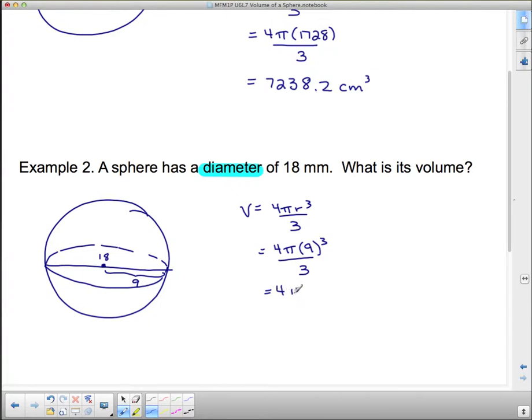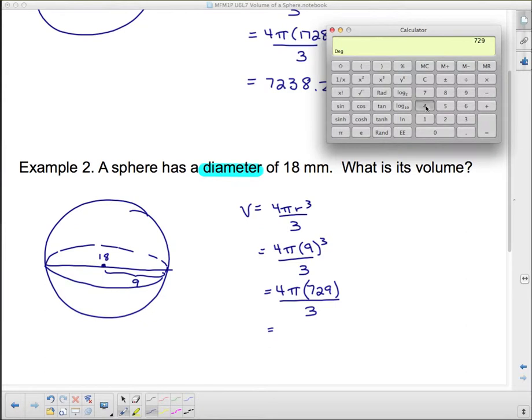So we need to do 4 × π × 729 ÷ 3. Let's do that on the calculator: 4 × π—if you don't have the π button you can just use 3.14.